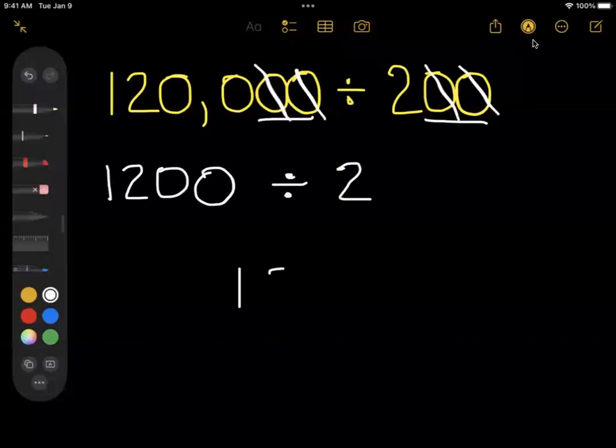So I'm going to put 1, 2, 0, 0 inside a division bracket. Oh no, that didn't come out the way I wanted it to. And then divide by two.